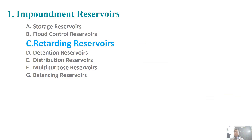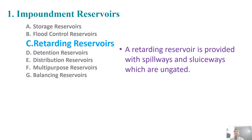The next type of impoundment reservoir is the retarding reservoir. As the name suggests, these reservoirs are used to retard — retard means slow — to retard the quantity, impact, and velocity of the water in the rivers. Retarding reservoirs are provided with spillways and sluiceways which are otherwise ungated. Ungated means we cannot control it, but the presence of spillways and sluiceways definitely retards the velocity of the waters.